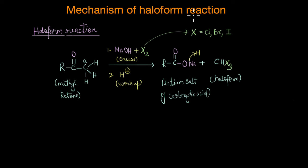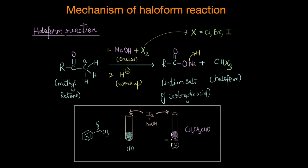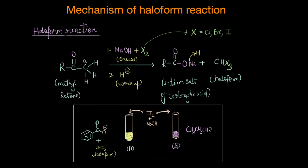The iodoform test, which is a type of haloform reaction, uses iodine as the halogen and can be used to physically distinguish methyl ketones from other compounds. For example, take two carbonyl compounds — one that has a COCH3 group and one that does not, say acetophenone and propanal. Acetophenone has a COCH3 group, while propanal does not.